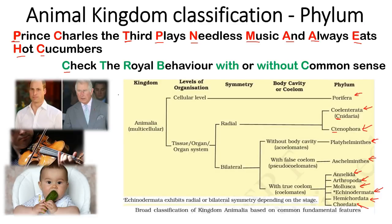C stands for cellular level of organization — Porifera has cellular level organization. T stands for tissue level organization — after Porifera, every phylum has tissue or organ or organ-system level organization. R means radial symmetry — C and T, that is Cnidaria and Ctenophora, both share radial symmetry. B stands for bilateral symmetry — all the rest have bilaterally symmetrical bodies.